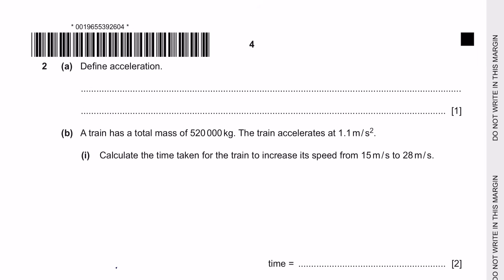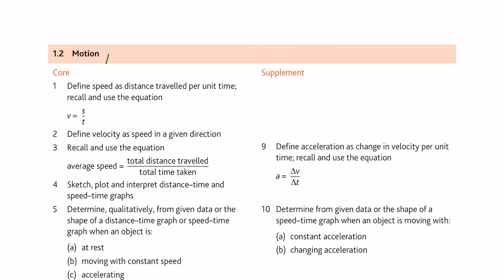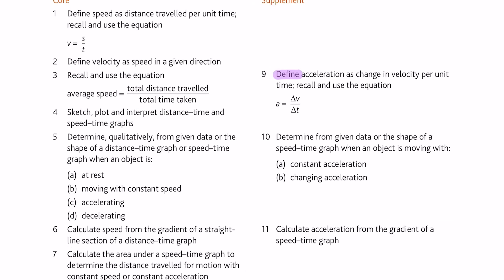Next, question 2 part A: Define acceleration. All definitions and formulas are already given in the syllabus for 2023–2025. I'll link the PDF in the description — print it and use it as your revision guide. Under section 1.2 on motion, the definition of acceleration is the change of velocity per unit time.